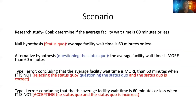This scenario comes directly from the textbook. They are trying to do a hypothesis test to figure out whether or not the average facility wait time is 60 minutes or less. The average wait time being 60 minutes or less is considered the status quo — the true fact at that moment. They want to test whether or not that is true. So the null hypothesis is going to be that the average facility wait time is 60 minutes or less.